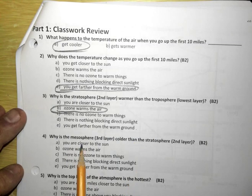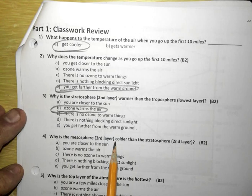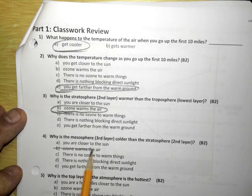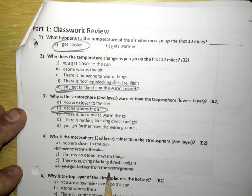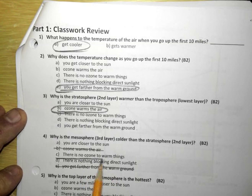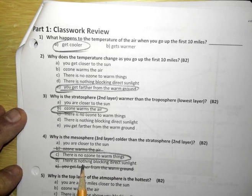Number four, why is the mesosphere, the third layer, colder? Same options. So we know it's not going to be option B, that's been used up already. And we know it's not E, because that's been used up already. Alex, which one? B. The correct answer is the mesosphere. C, there's no ozone to warm things up, so it gets cold again.